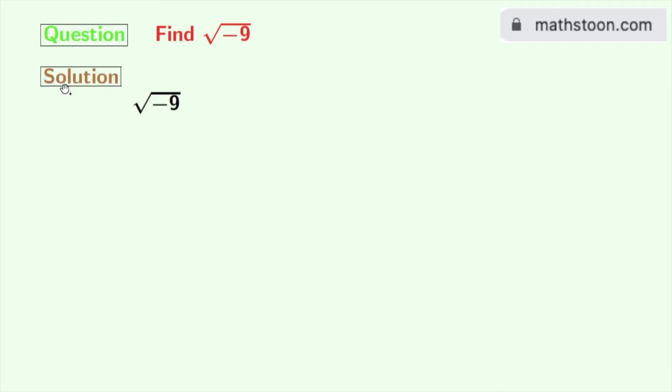Now let's start. So this is square root of minus 9, and we will rewrite this as square root of 9 times minus 1.